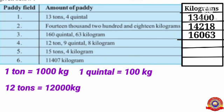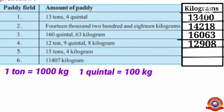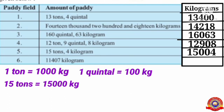The fourth field got 12 tons, 9 kindle, and 8 kilograms of paddy. One ton equals 1,000 kilograms, so 12 tons equals 12,000 kilograms. One kindle equals 100 kilograms, so 9 kindle equals 900 kilograms. Total: 12,908 kilograms. The fifth field got 15 tons and 4 kilograms of paddy. 15 tons equals 15,000 kilograms. Total: 15,004 kilograms.